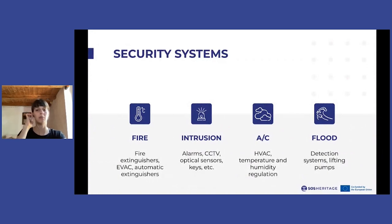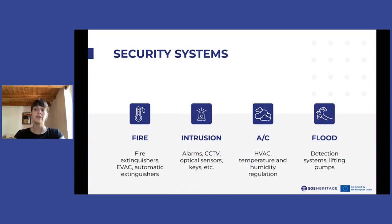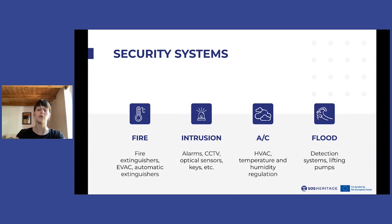These are some examples of the security systems that might be analyzed during the inspection. There are all the systems dedicated to fire risks, such as fire extinguishers, alarms, and any kind of automatic extinguisher systems. Then there is the anti-intrusion system with its alarms, CCTVs, optical sensors, and distribution of keys and badges. There is also the air conditioning system covering all microclimatic systems, including temperature and humidity regulation and control. Finally, the anti-flood system, covering whether the museum has detection systems for flooding or lifting pumps for water.